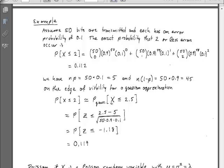We have the probability that X is less than or equal to 2 is the same as the probability that X is less than or equal to 2.5. That's my continuity correction. I convert this to a standard normal variable, so I have Z is less than 2.5 minus the mean divided by the standard deviation, which gives the probability that Z is less than minus 1.18, which has a probability 0.119. So here we got 0.119 and up here we got 0.112.